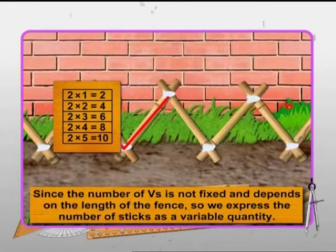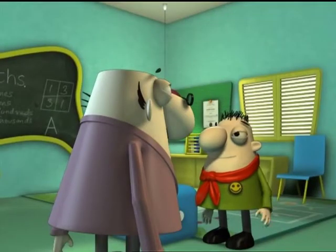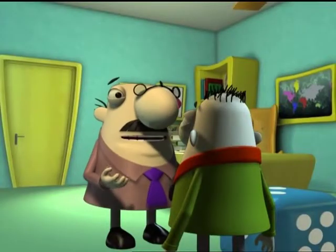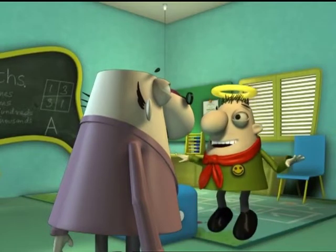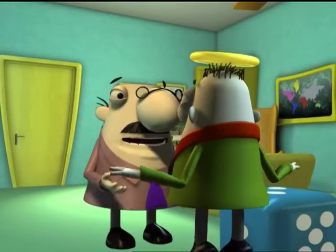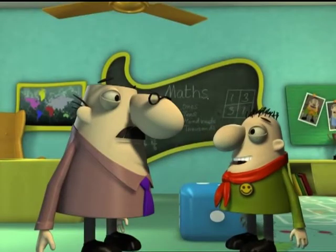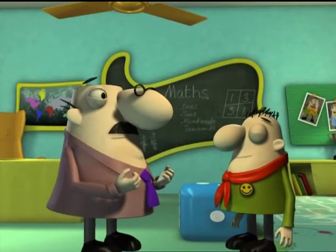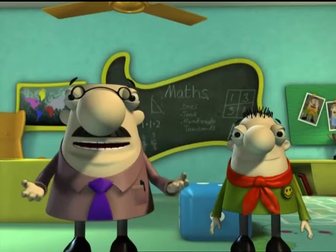That solves our gardener's problem. I get it. The symbols for unknown numbers are called variables. Smart cookie you are, Kelsey. Thank you, Professor. I'm just too good. Now, overconfidence can be disastrous, you know. Not for me, Professor. I'm confident because my mind is always at work. Well, that explains your constant hunger. Anyway, moving on. Let's continue our learning with Mathemagic.